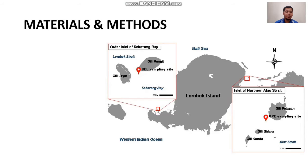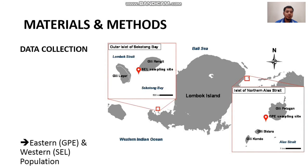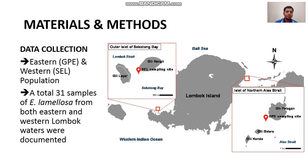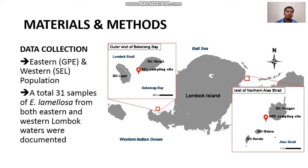We collected data from Eastern and Western Lombok waters. A total of 31 samples of Echinopora lamillosa from both Eastern and Western Lombok waters were documented. We called the coral from the Eastern part of Lombok waters the Eastern Population or GPA, and from the Western part we called it the Western Population or SEL.